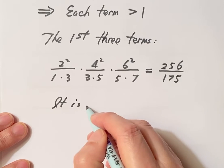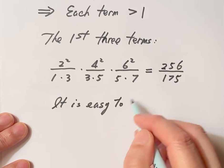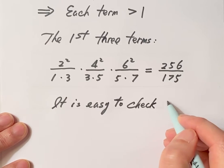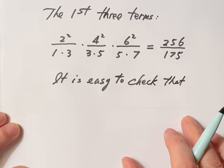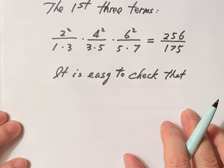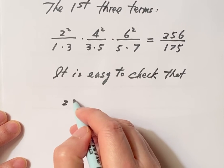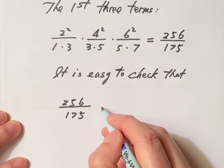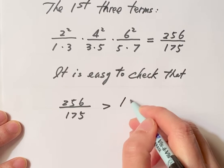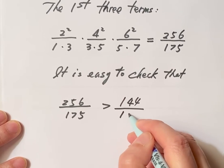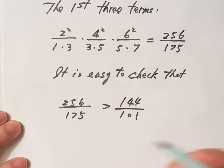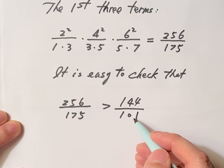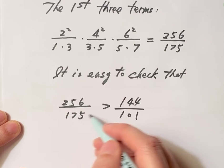It is easy to check that 256 over 175 is bigger than 144 over 101. It's easy, you don't have to use calculator, just use cross multiplication. This times this is bigger than this times this.